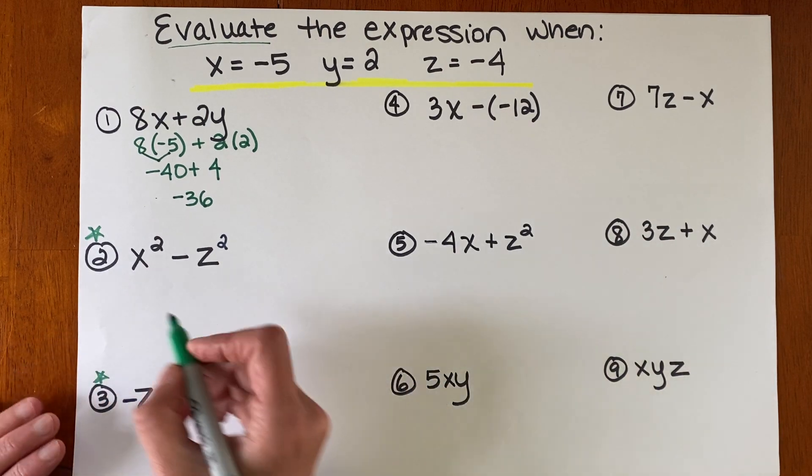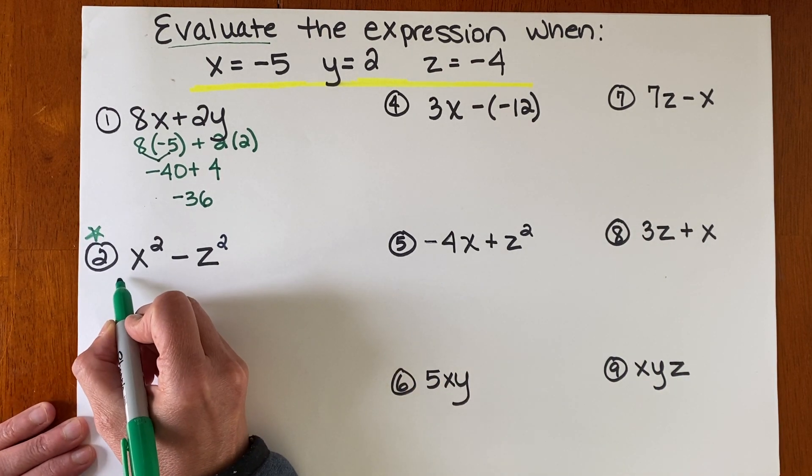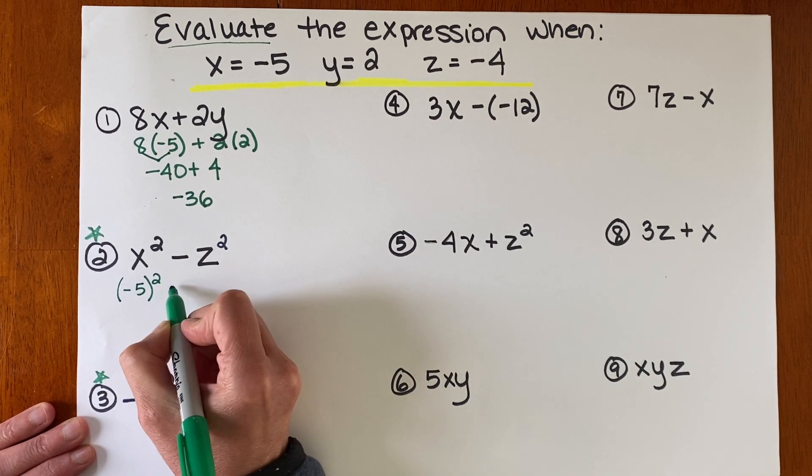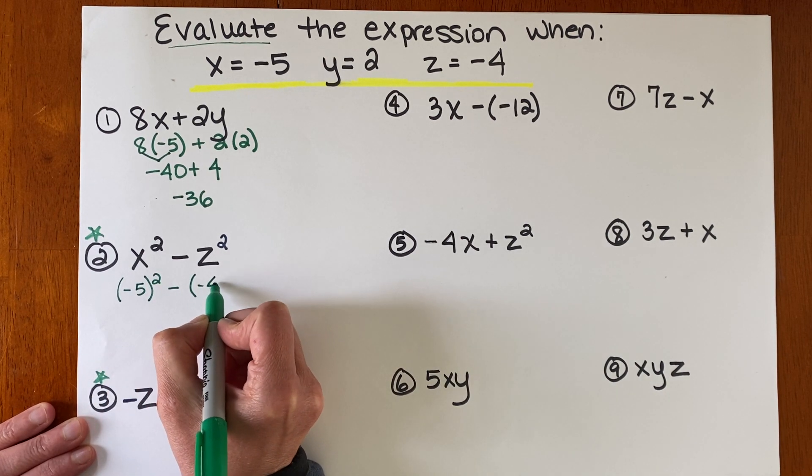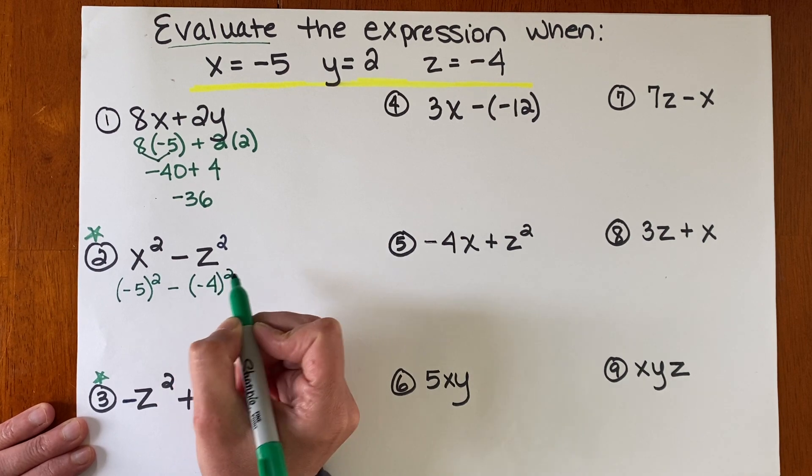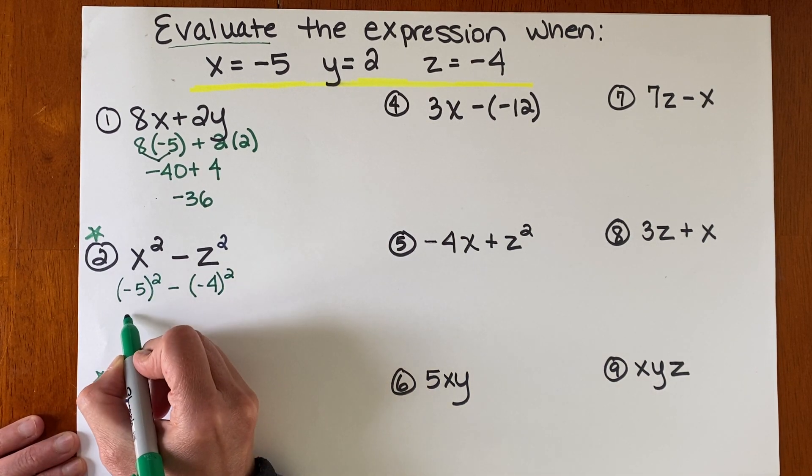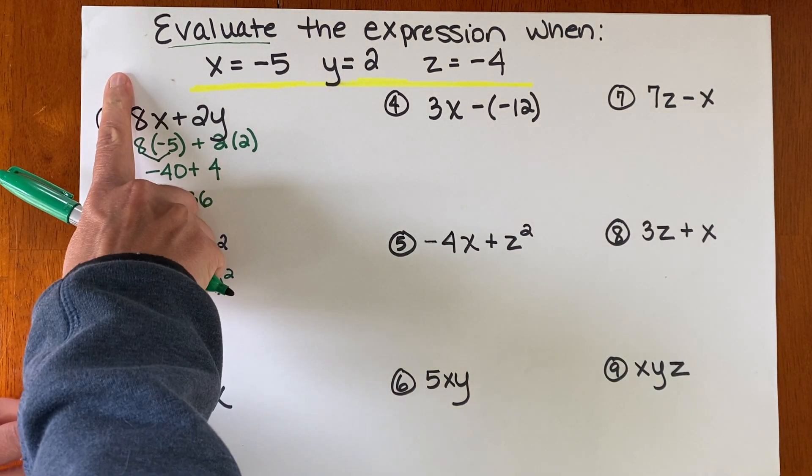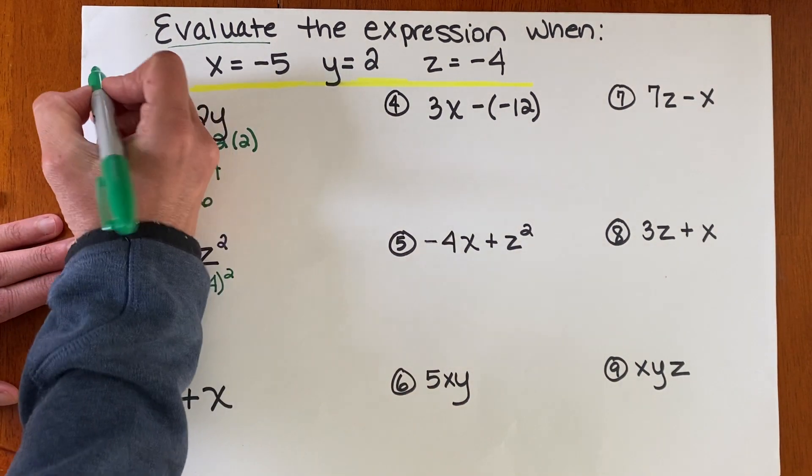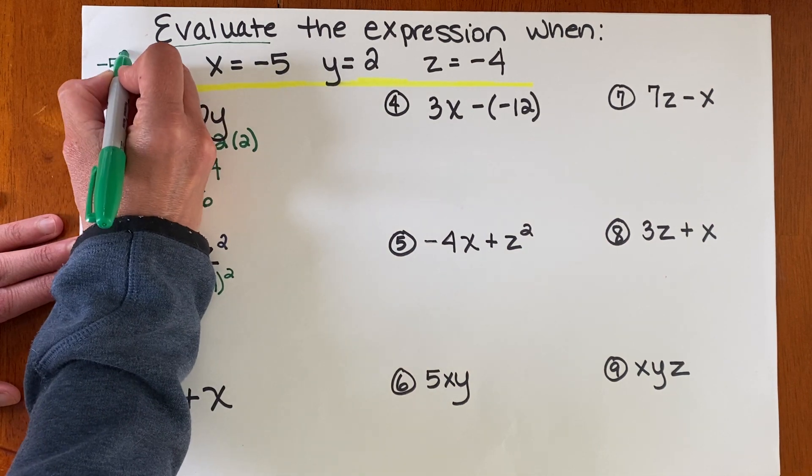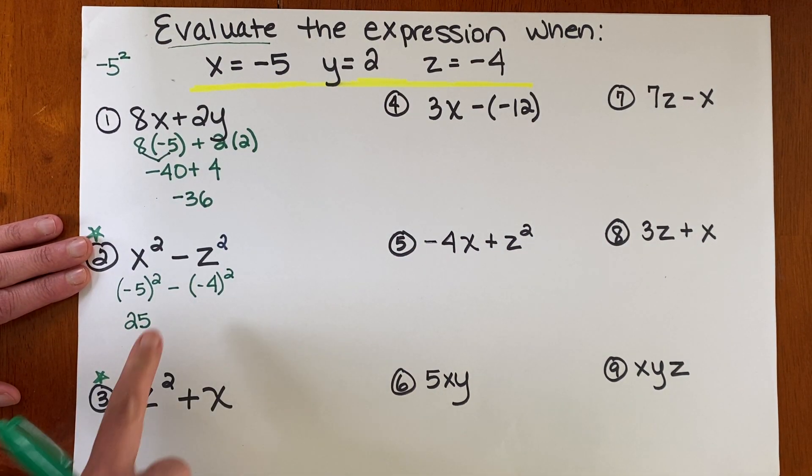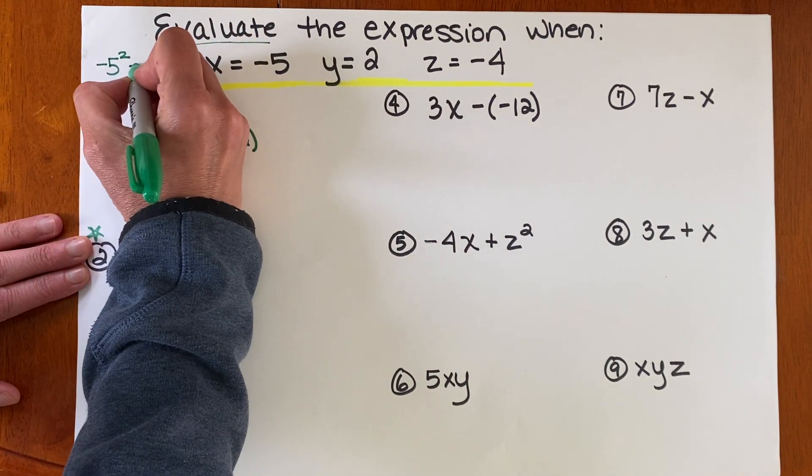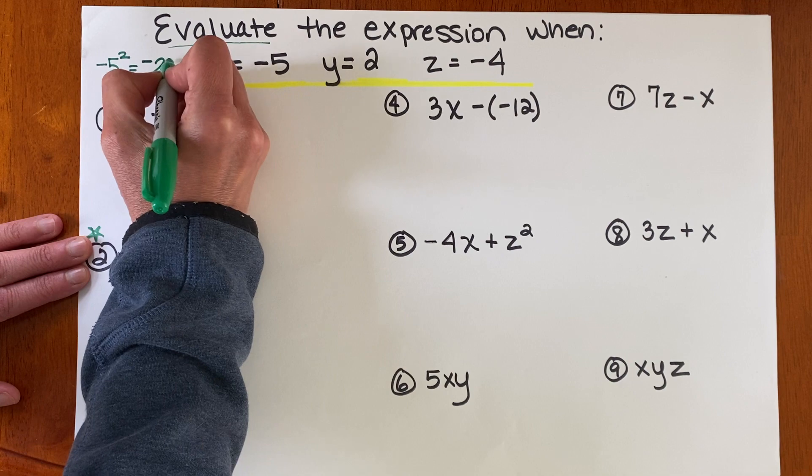Number two. Okay. If you don't plug in with parentheses, you're going to get it wrong. Negative 5 times negative 5 is positive 25. Can I show you something up here? If you were to have written it like this, right? And not done those parentheses, if you wrote it like this, this actually equals negative 25.